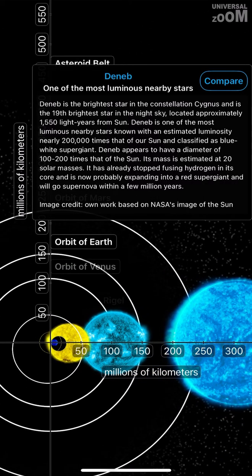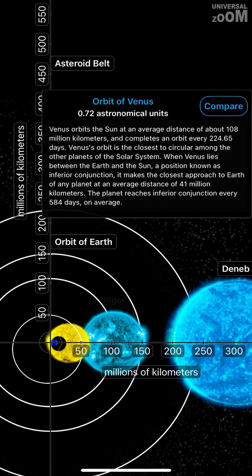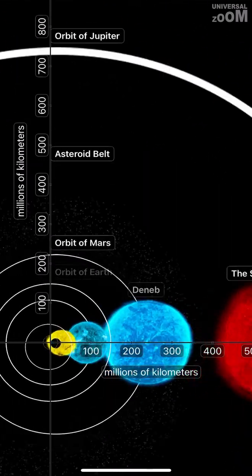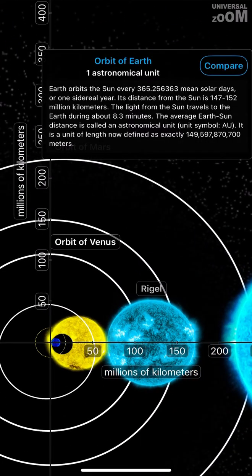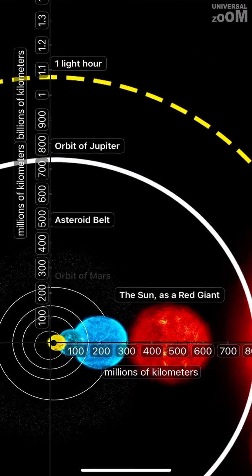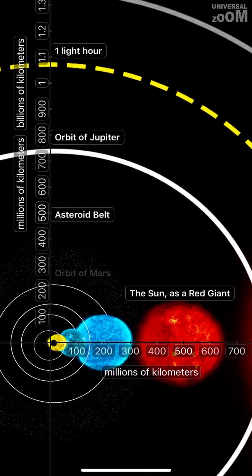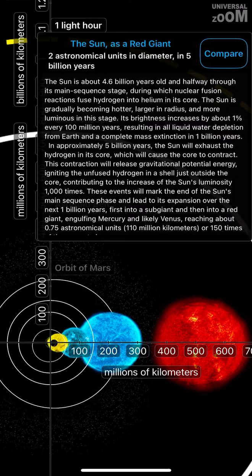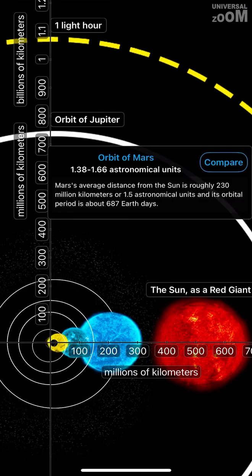Deneb, one of the most luminous nearby stars. Orbit of Venus, 0.72 astronomical units. Orbit of Earth, one astronomical unit. The Sun, as a red giant, two astronomical units in diameter, in 5 billion years. Orbit of Mars, 1.38 to 1.66 astronomical units.